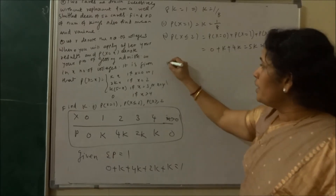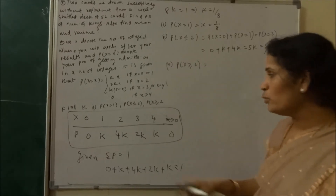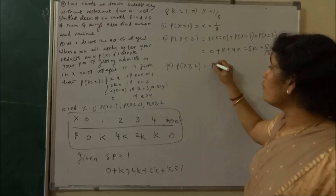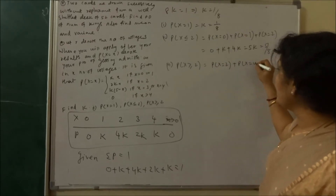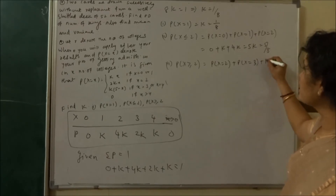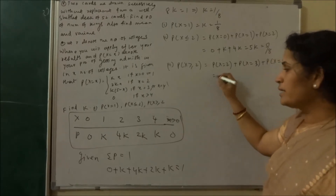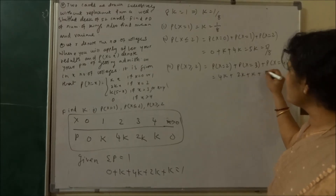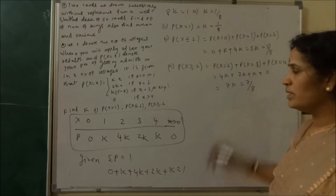Part 3: P(x ≥ 2) — above 2 means x = 2, 3, 4. P(x=2) = 4k, P(x=3) = 2k, P(x=4) = k, and P(x > 4) = 0. So P(x ≥ 2) = 4k + 2k + k = 7k = 7/8. This type of question is frequently asked in exams.